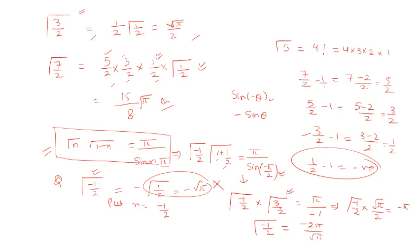So value of minus gamma is minus 2 pi by root pi. One root will be calculated one root. So in this way, you can find out the value of gamma functions which are in fraction form or in negative forms.